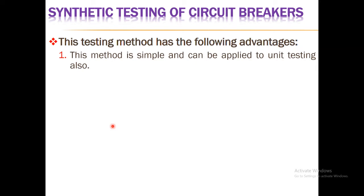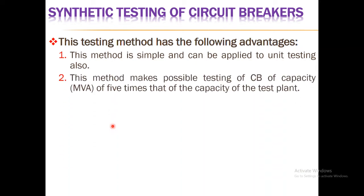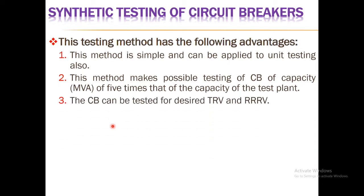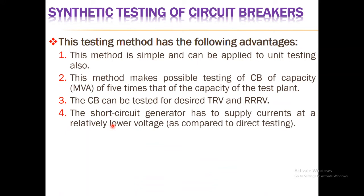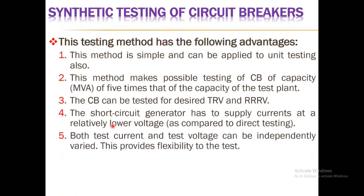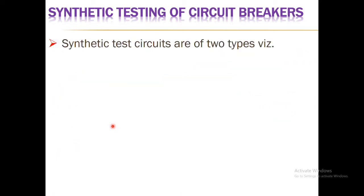The advantages of synthetic testing are: this method is very simple and can also be applied to unit testing. It makes possible to test the circuit breaker at a capacity of five times that of the short circuit generator's capacity. The circuit breaker can be tested for desired values of transient recovery voltage and rate of rise of restriking voltage. The short circuit generator supplies current at relatively lower voltage compared to direct testing, and both test current and test voltage can be independently controlled, providing better flexibility.